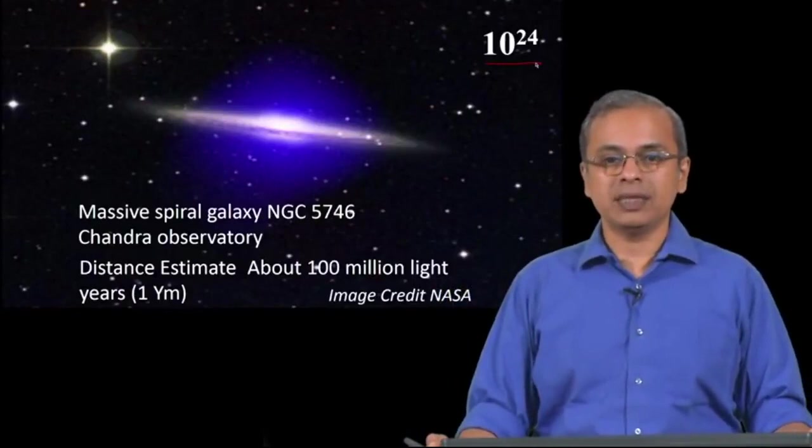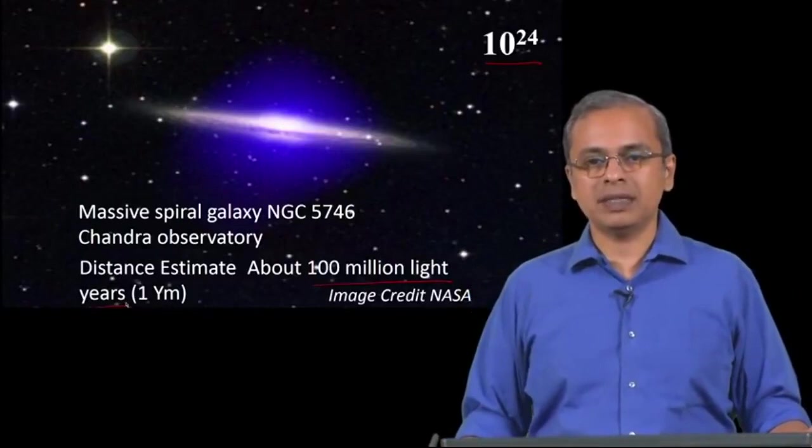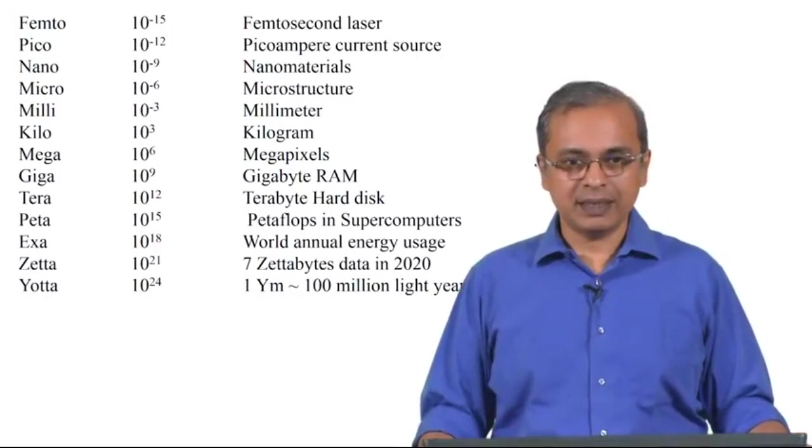To 10 power 24. That is referred to as yotta. Yotta is the quantity, and 100 million light years is equal to 1 yotta meter. In other words, 10 power 24 meters is 100 million light years.